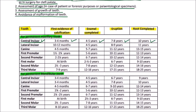For the maxillary canine, the first evidence of calcification occurs at 4 to 5 months, enamel is completed by 5 to 7 years, eruption occurs by 11 to 12 years, and the root is completed by 13 to 15 years.